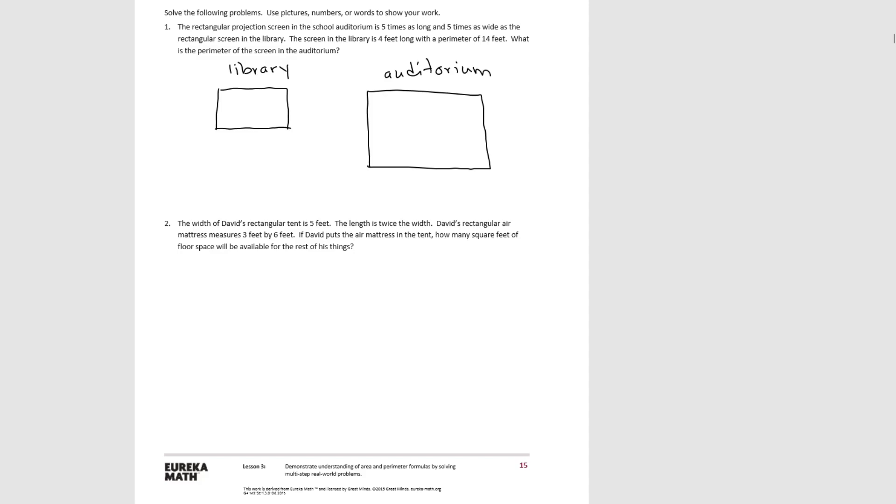We know that the screen in the library is four feet long and the perimeter is 14 feet. The perimeter of the library is 14 feet, so the opposite sides are both four feet, so added together is eight. If we need a sum of 14, then we know that the other two sides have to sum up to six, so we can divide that into two groups of three for each side. So our perimeter is 3 + 4 which is 7 times 2 which is 14.